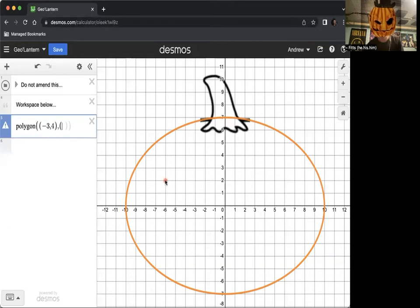And then say I want the triangle to go over here to like negative six, two, close that parenthesis, hit a comma, and then say I want it to go up to negative two, three, something like that, and then we can just take a look at it.